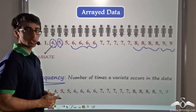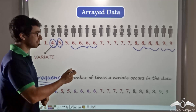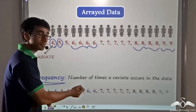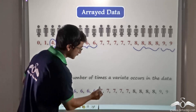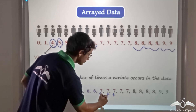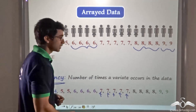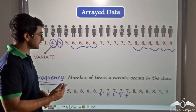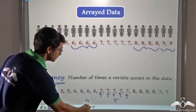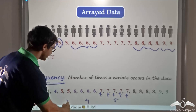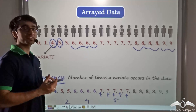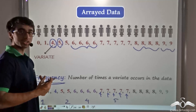Frequency is the number of times a variate occurs in the given data set. So if I ask you what is the frequency of 7, from this array data I can say that 7 has occurred 1, 2, 3, 4 and 5 times. Since 7 has occurred 5 times, the frequency of 7 is 5. Likewise, the frequency of 6 is 4, the frequency of 5 is 2, and the frequency of 0 is 1. Frequency of a variate is simply the number of times it has occurred in the data.